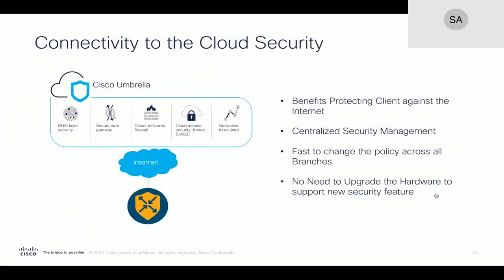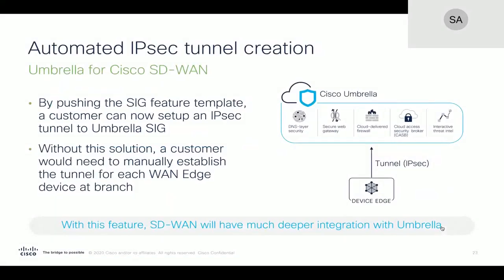That brings us to the second demo. We're at the branch now. In the previous demo, we already established a tunnel to the cloud infrastructure. But now we're talking about internet traffic going out directly — and we're not sure how secure that internet traffic is. You want to have some control over internet connectivity, which is why you probably need a firewall. But you don't want to spend time deploying and managing a firewall on the ground, because you want to make it simpler — and that's where Cisco SD-WAN and Cisco Umbrella come together as a SASE solution.